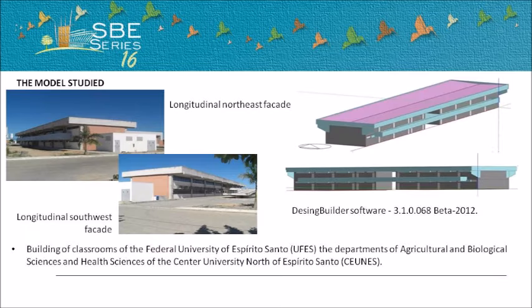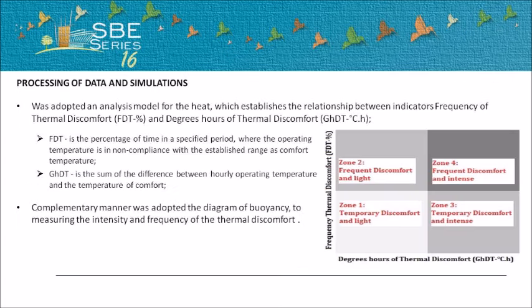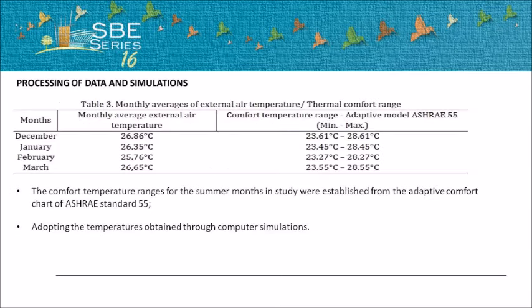The object of study is the building of classrooms of the Federal University of Espírito Santo. An analysis model for heat was adopted, which establishes the relationship between indicators: the frequency of thermal discomfort and degrees-hours of thermal discomfort. In a complementary manner, the diagram of buoyancy was adopted to measure the intensity and frequency of the thermal discomfort.